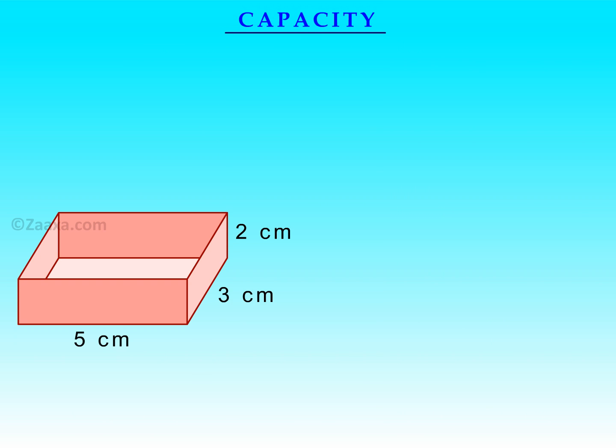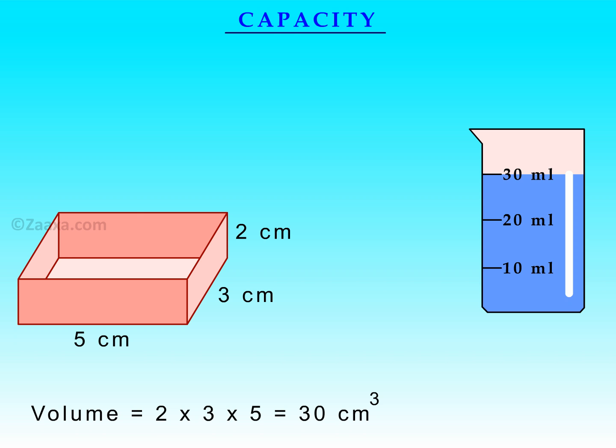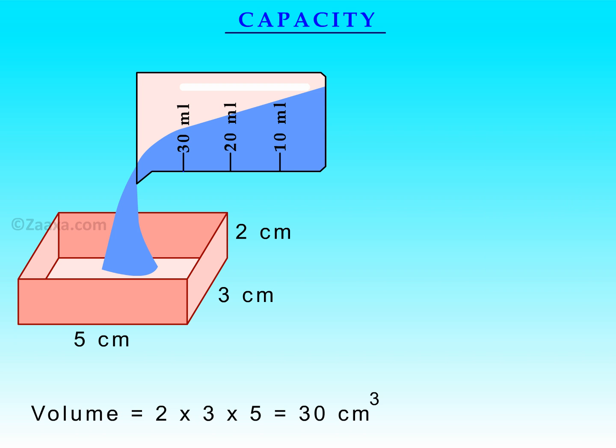The capacity of a container tells us the volume of fluid it can hold. Note that when we use the term capacity, it generally refers to a hollow container that can hold fluids. The capacity of the container shown is the same as its volume. With the help of the dimensions, we know that the volume of the container is 30 centimetre cube. This means that it can hold 30 centimetre cube of water or any other fluid.